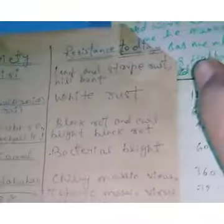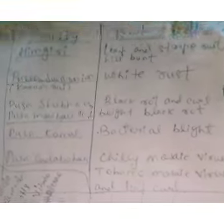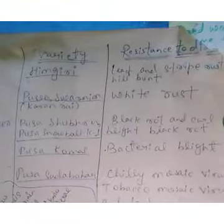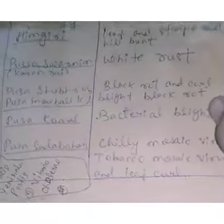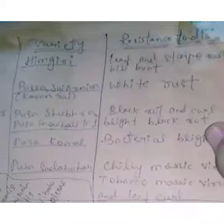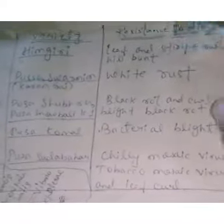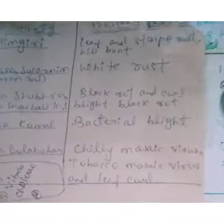The third one is cauliflower — Pusa Shubhra or Pusa Snowball K1 — and it is resistant to black rot, also called black blight. The last one is chilli, which is Pusa Sadabahar, and it is resistant to chilli mosaic virus, tobacco mosaic virus, and leaf curl. This is a very important topic.